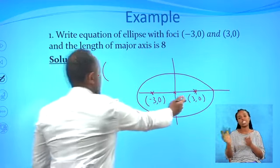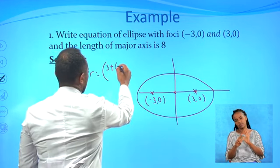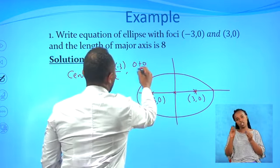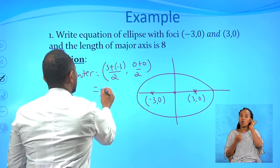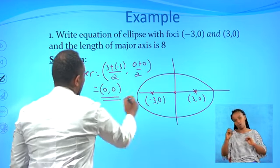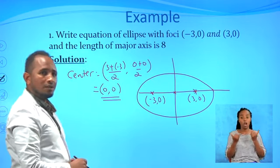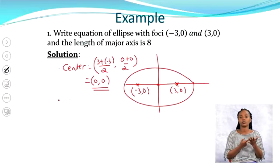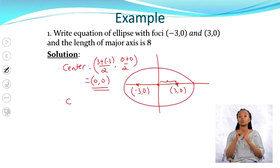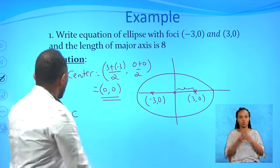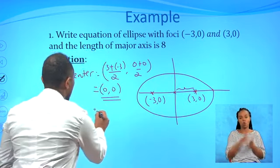The center becomes ((3 + (−3)) / 2, (0 + 0) / 2) = (0, 0). Now we need to find the other variables a, b, and c. The value of c is the distance from the center to one focus. The center is (0, 0) and the focus is at 3 units away, so c equals 3.